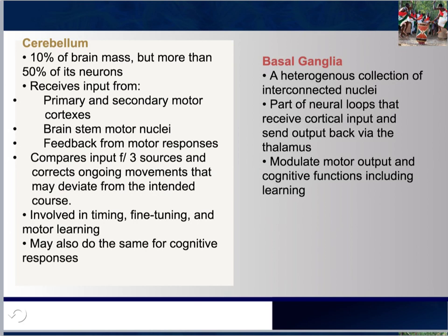The basal ganglia is a heterogeneous collection of interconnected nuclei — it's not all the same, there are multiple. It is part of the neural loops that receives cortical input and sends output back via the thalamus, which is the sensory relay station. This would modulate motor output and cognitive functions, including learning. When we look at a gymnast able to jump and drum with perfect timing, that would have a response based on learned behavior influenced by the basal ganglia.